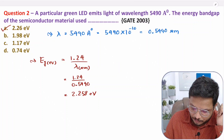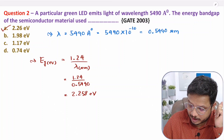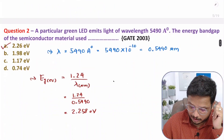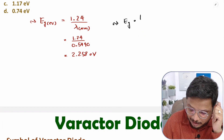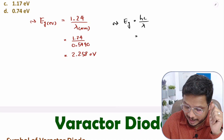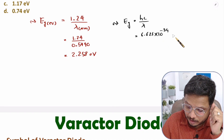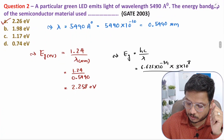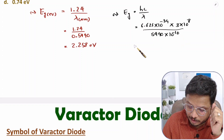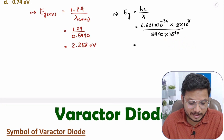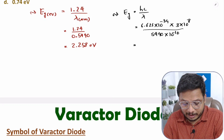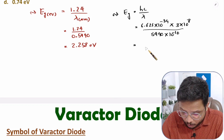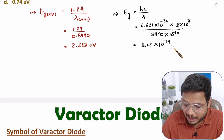There is another way to solve this if you don't remember the shortcut formula. You can apply the normal calculation: Eg = hc/λ. Here h = 6.625 × 10⁻³⁴ J·s, c = 3 × 10⁸ m/s, and λ = 5490 angstrom = 5490 × 10⁻¹⁰ m. Solving: (6.625 × 3) / 5490 gives 3.62 × 10⁻¹⁹ joules.